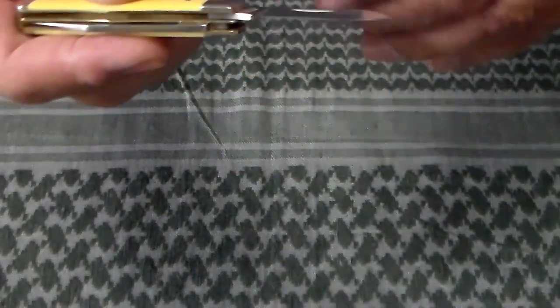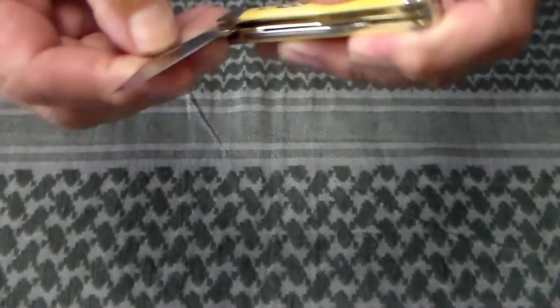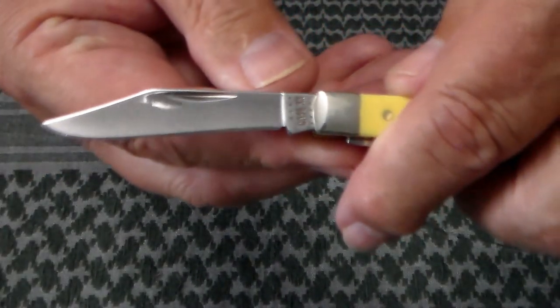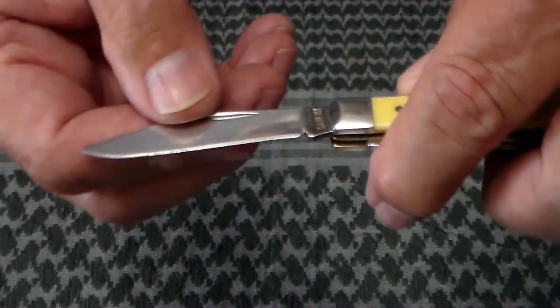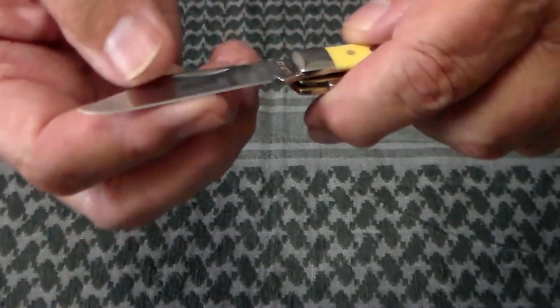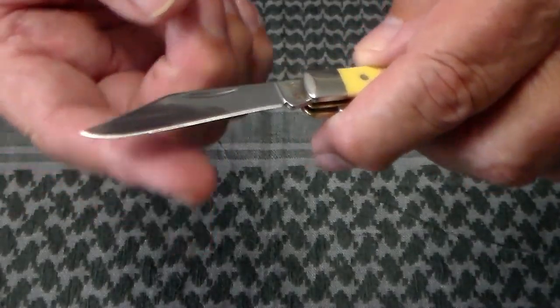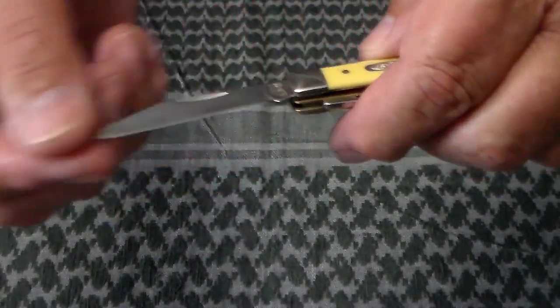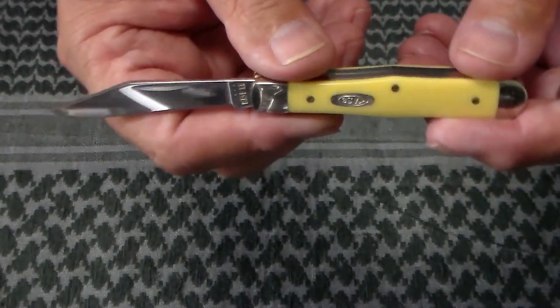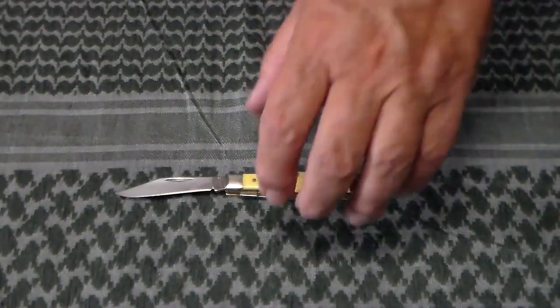Both blades are like that. That's my only complaint about really most of the Case pocket knives is the rough edge. I can still feel the burr on the back when I go across it like that. So I'm gonna have to work on that.